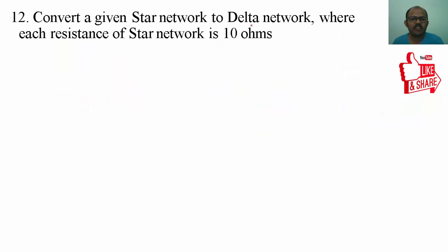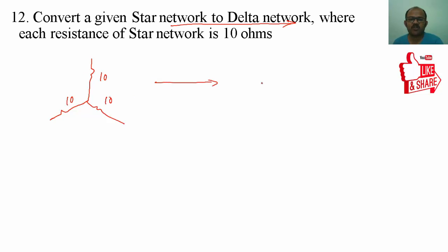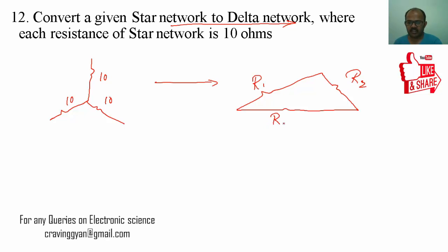Twelfth question: they have given a star network and you have to convert it into a delta network. Each resistance value is 10 ohms. You have to write the equivalent delta network. Let me name the impedances as R1, R2, and R3.